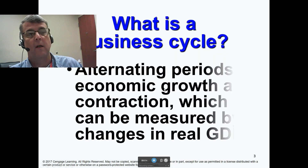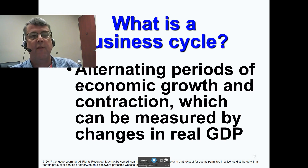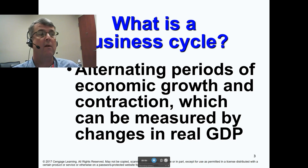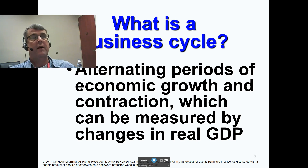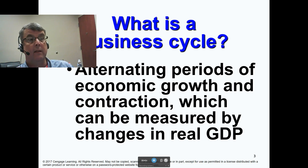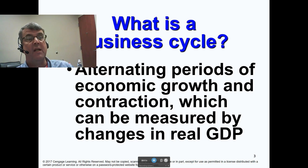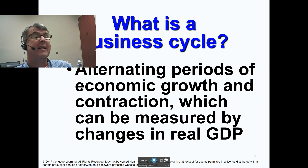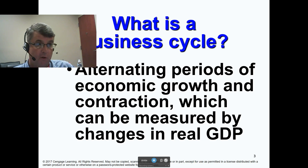So what is a business cycle? Your book says it's alternating periods of economic growth and contraction, which can be measured by changes in real GDP. If you remember from Chapter 15, when we calculate real GDP, we take nominal GDP as it is tabulated in the current year, then we divide that by the GDP chain price index, and multiply the whole thing by 100 to get rid of the 100 we put into the GDP chain price index. That gives you real GDP.